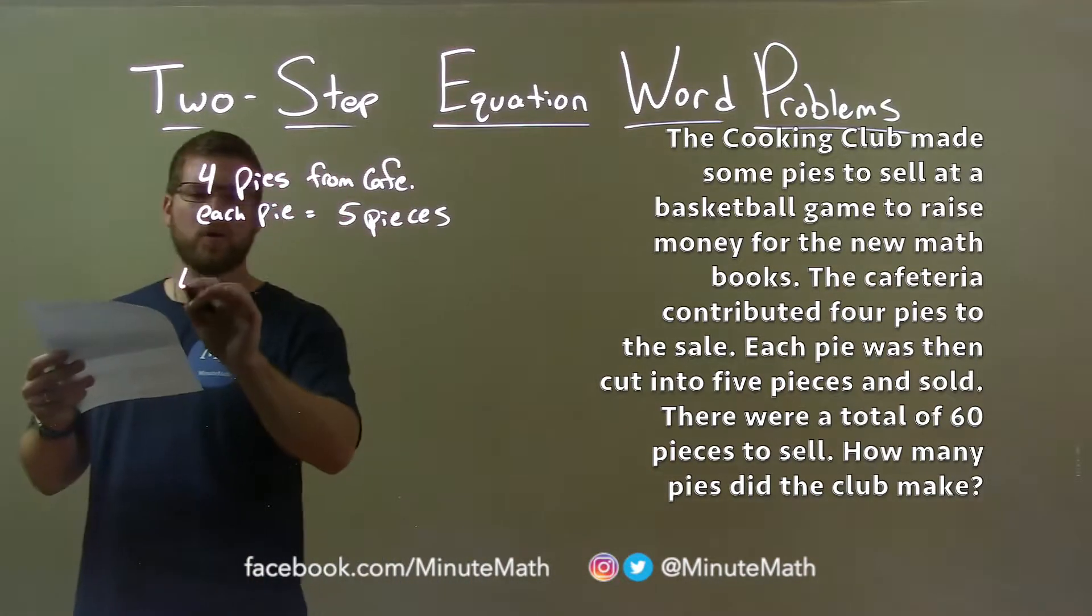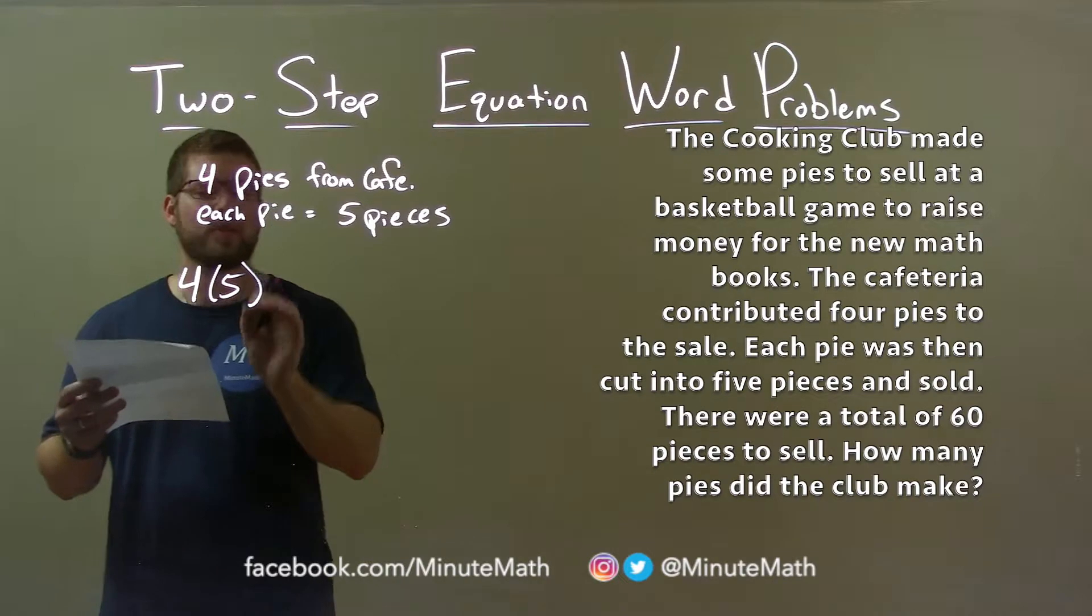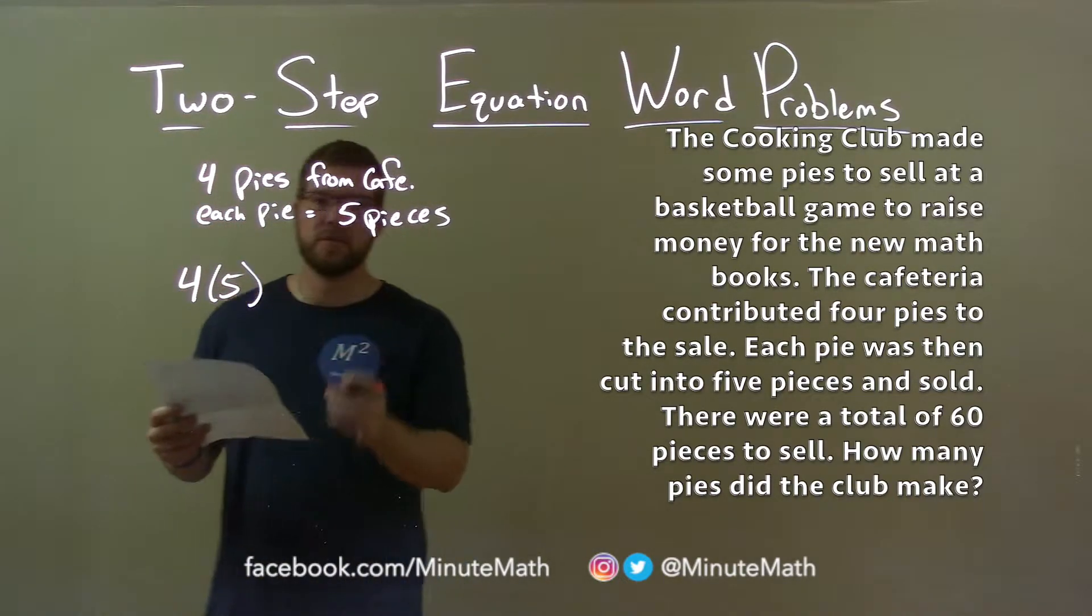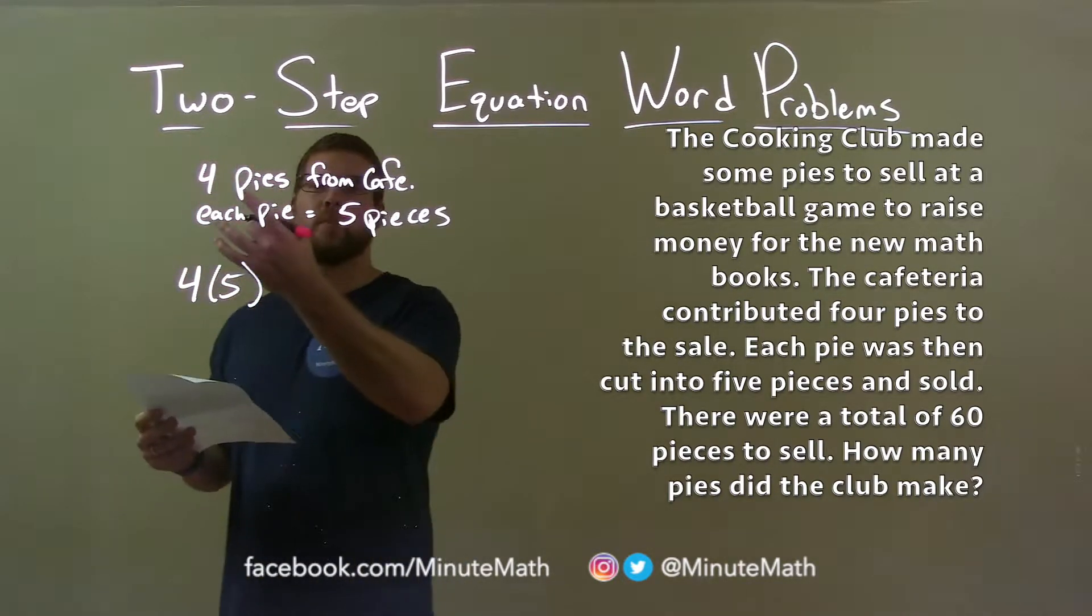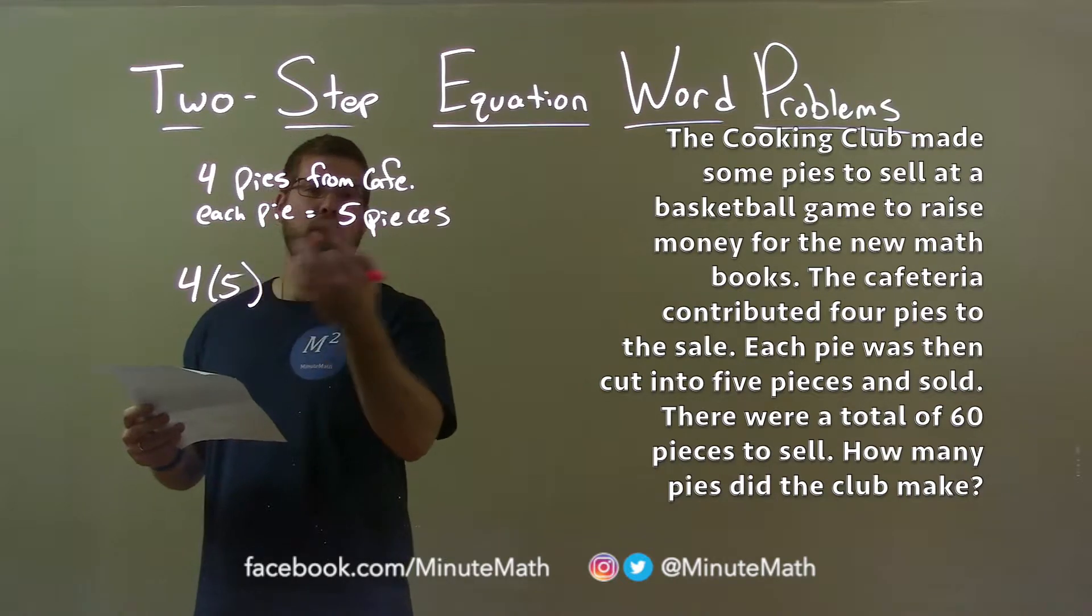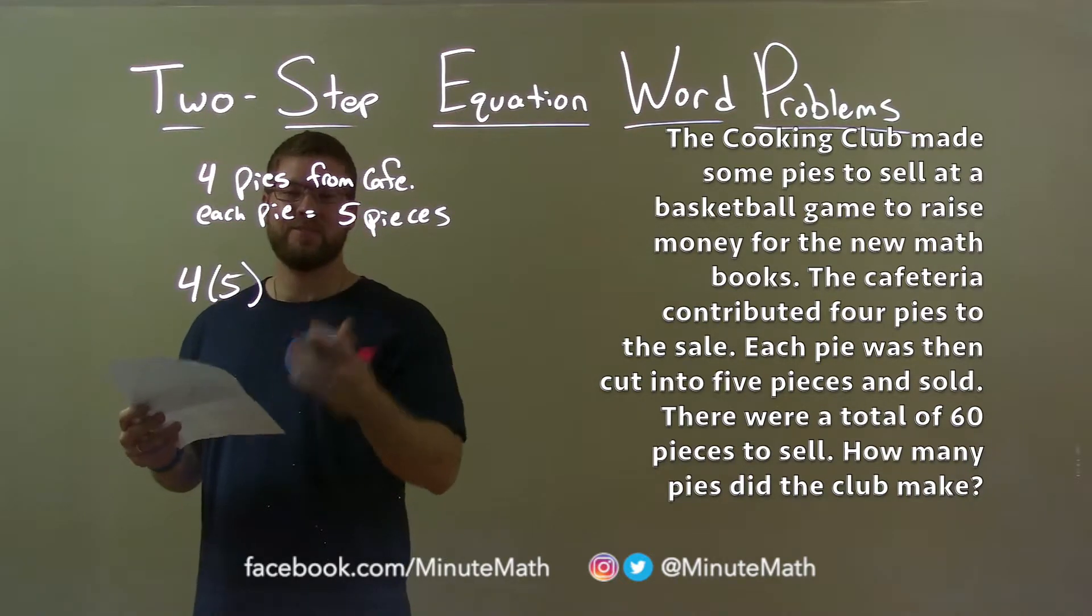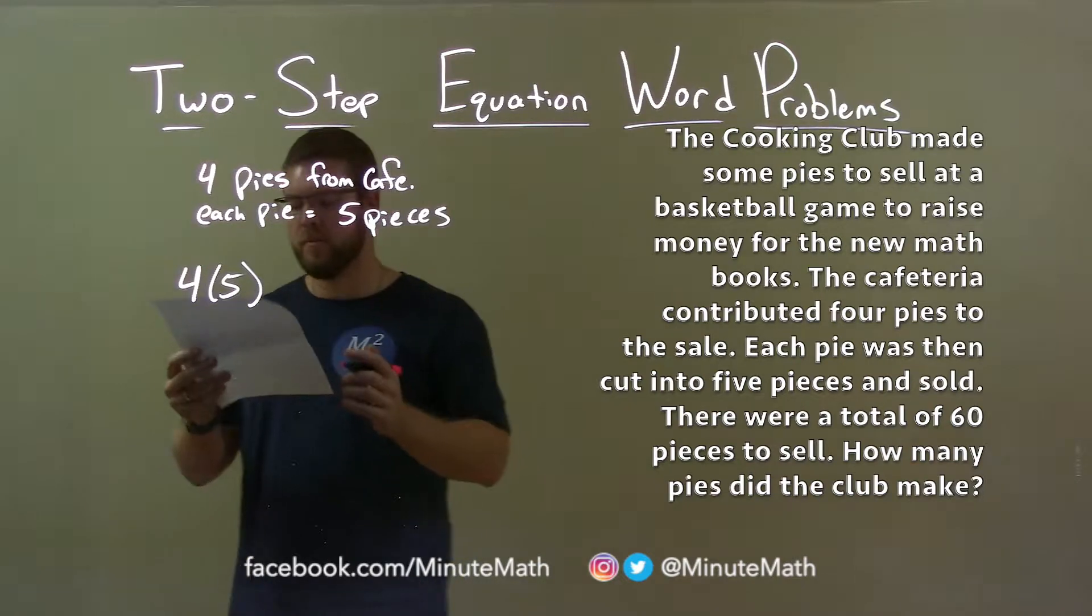So if I do four times five, that will represent the number of slices the cafeteria provided. Four pies, and each pie is five pieces. Four times five gives us the number of pieces of pie the cafeteria provided.